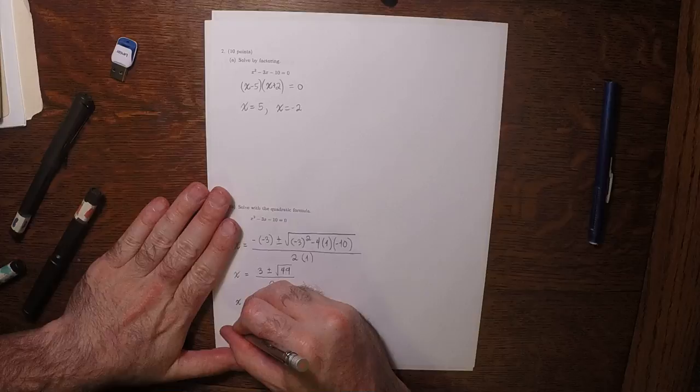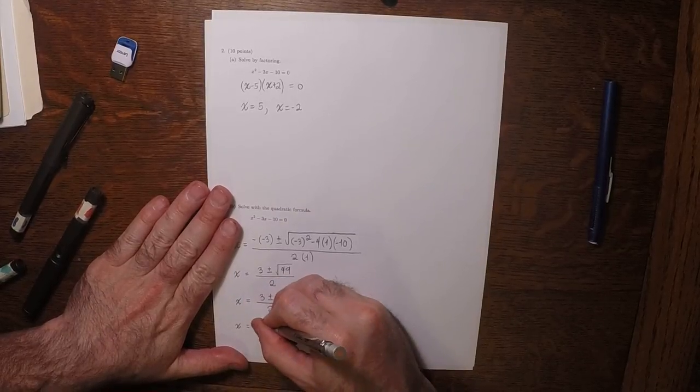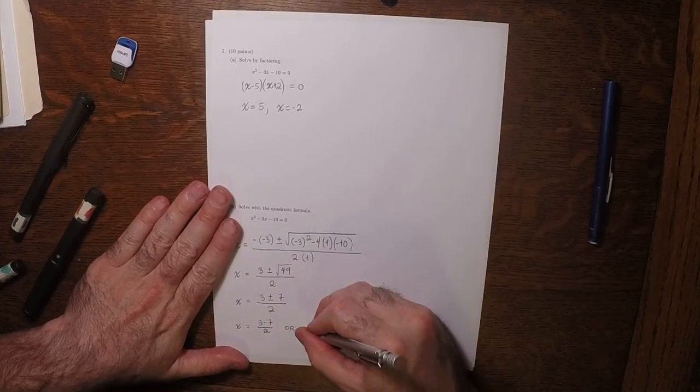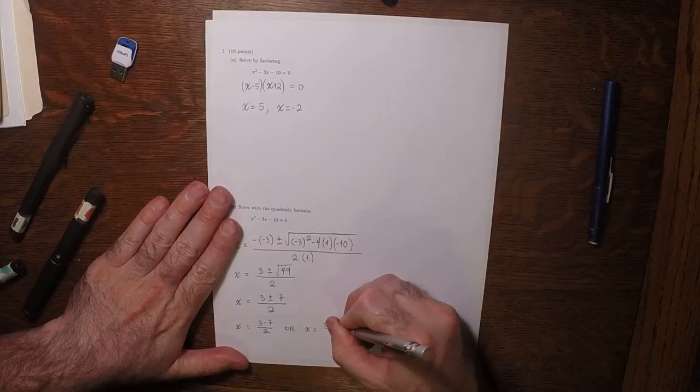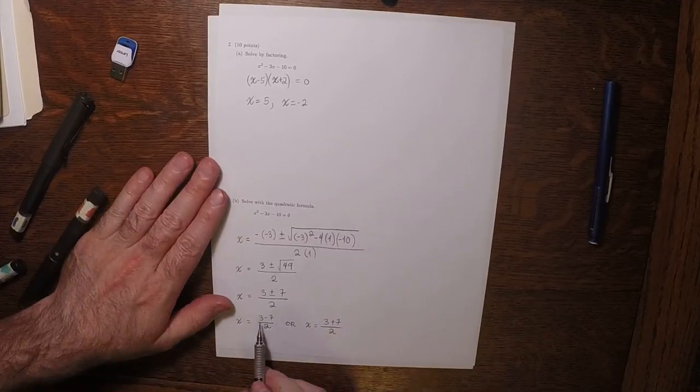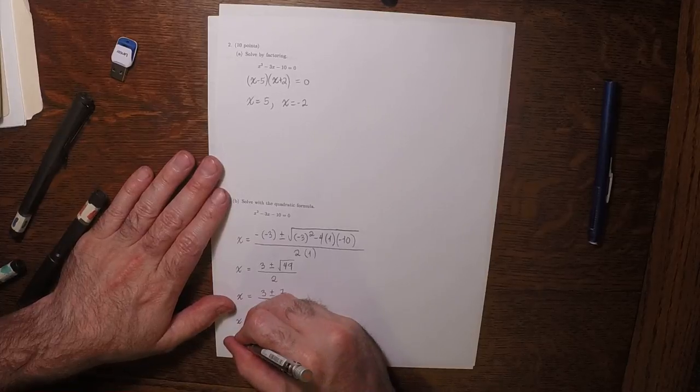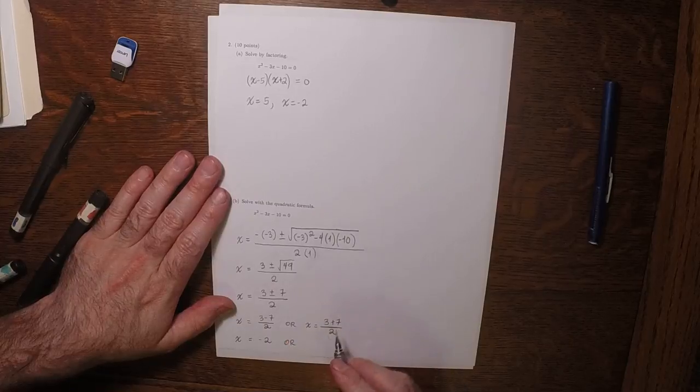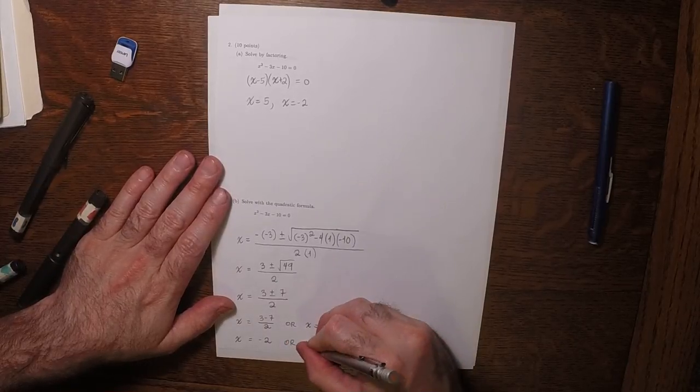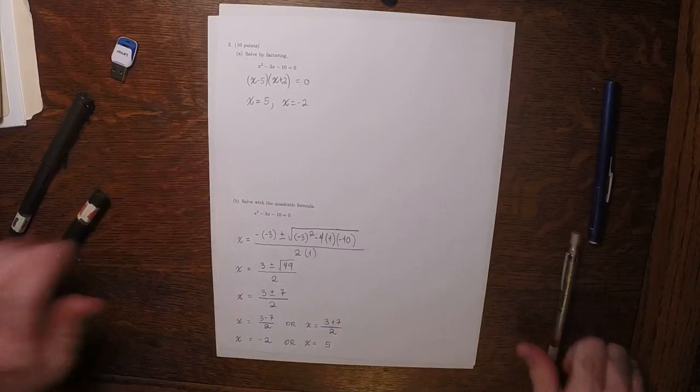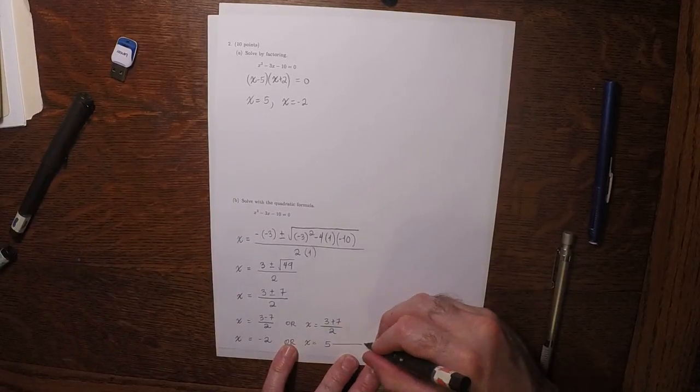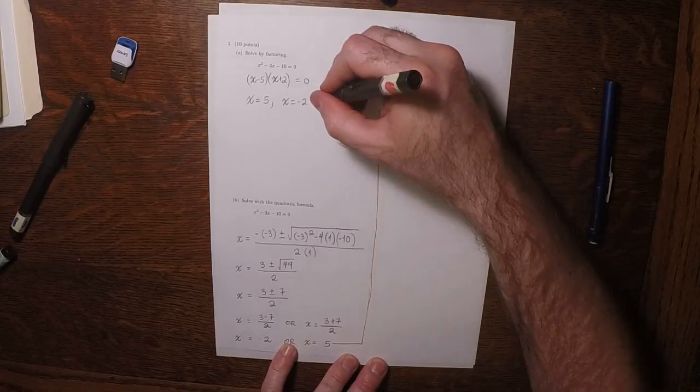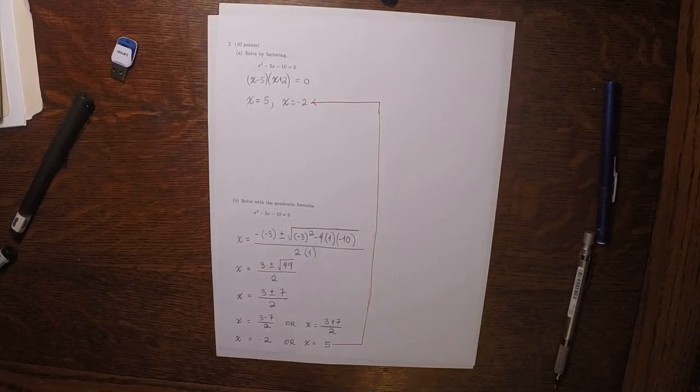So the two possibilities are x is 3 minus 7 over 2, or x is 3 plus 7 over 2. Well, 3 minus 7 is negative 4, divide by 2 is negative 2. And then 3 plus 7 is 10 over 2 is 5. And of course, the same as above.